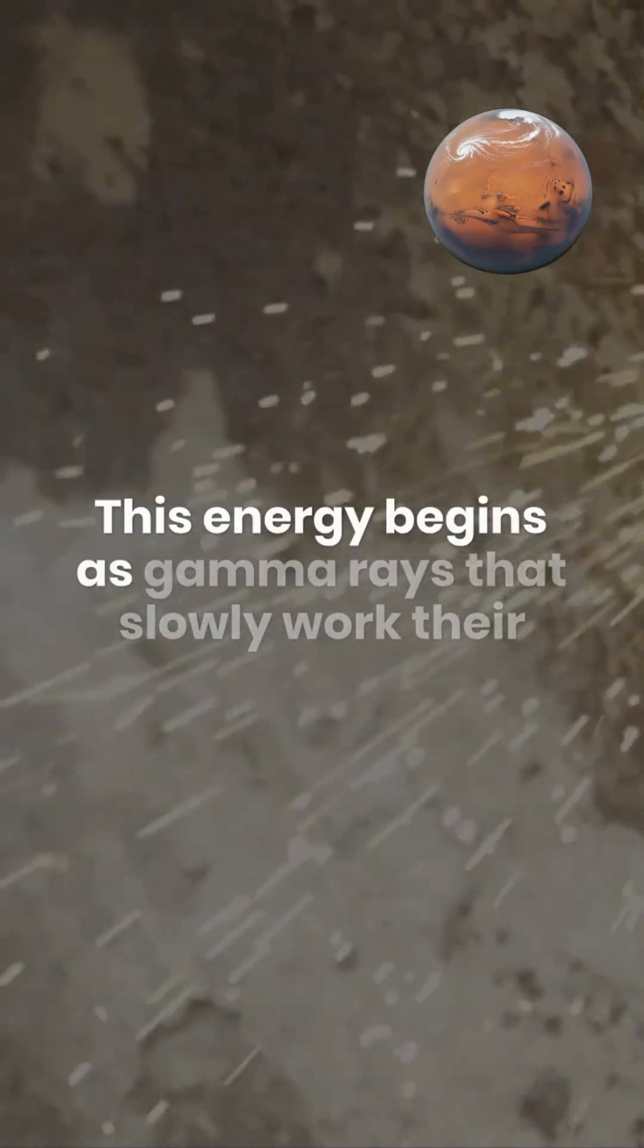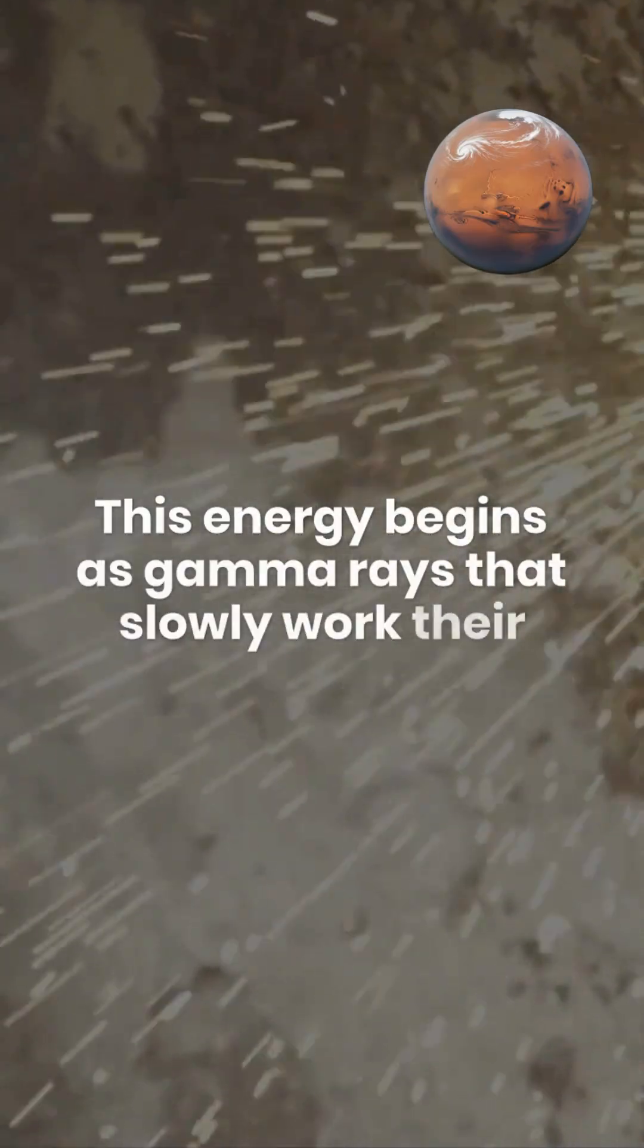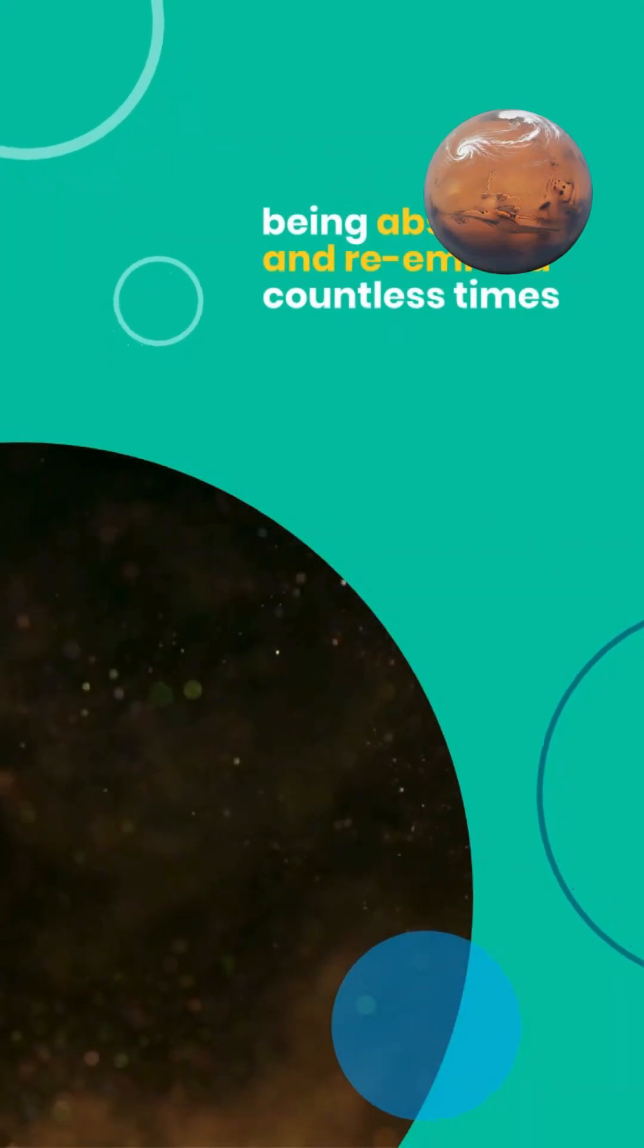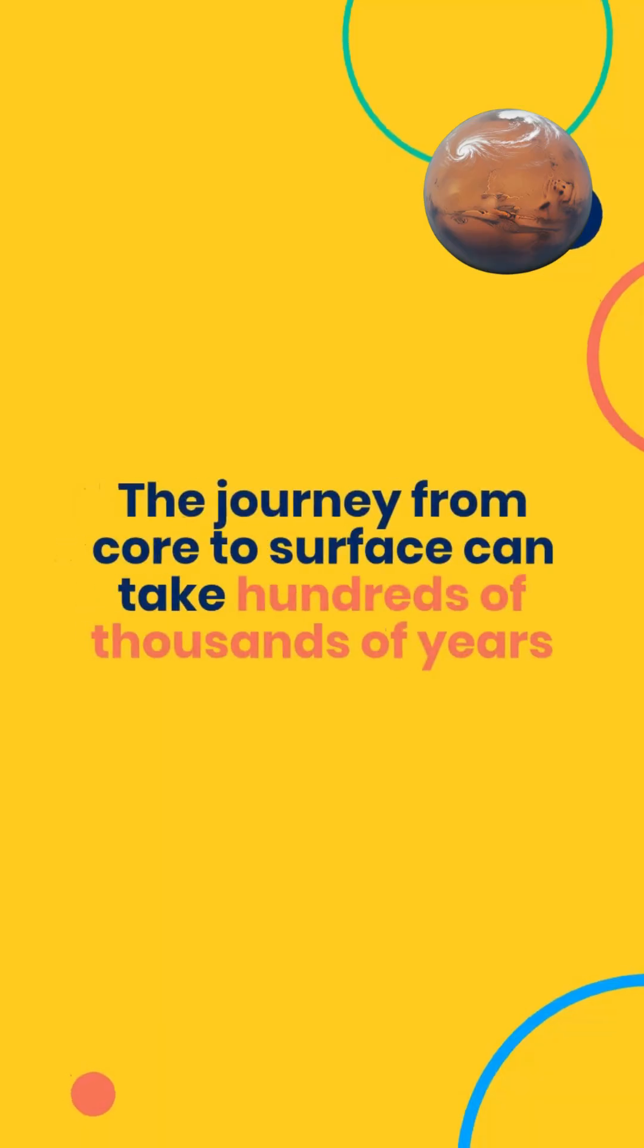This energy begins as gamma rays that slowly work their way outward through the star's interior, being absorbed and re-emitted countless times. The journey from core to surface can take hundreds of thousands of years.